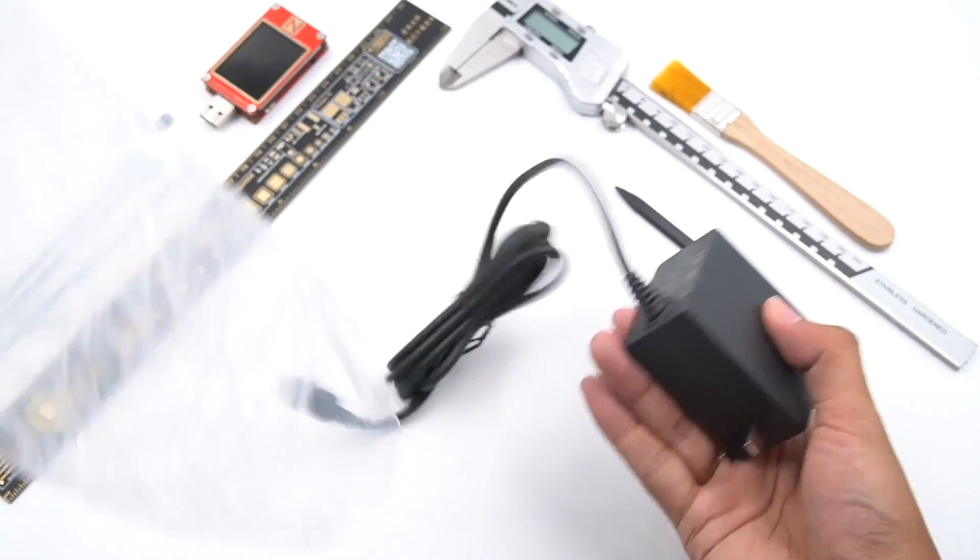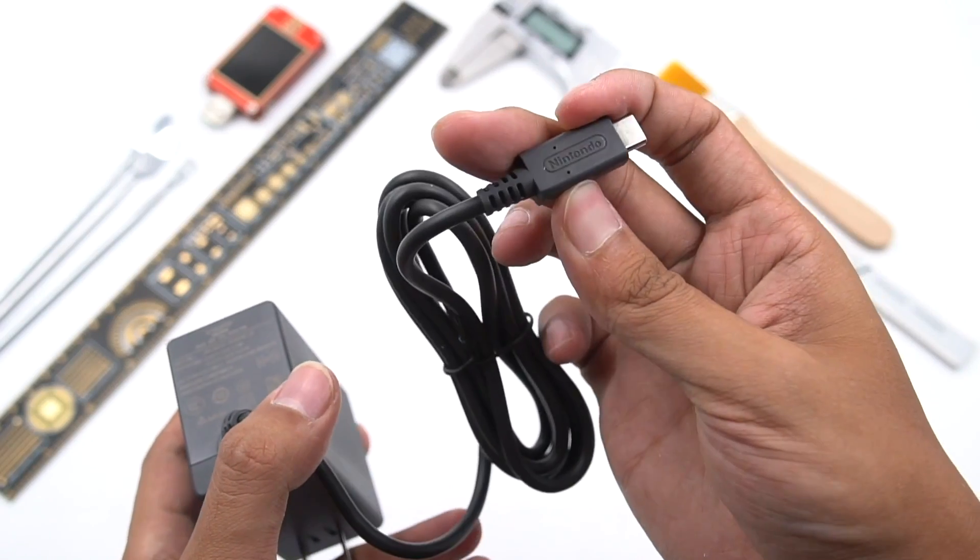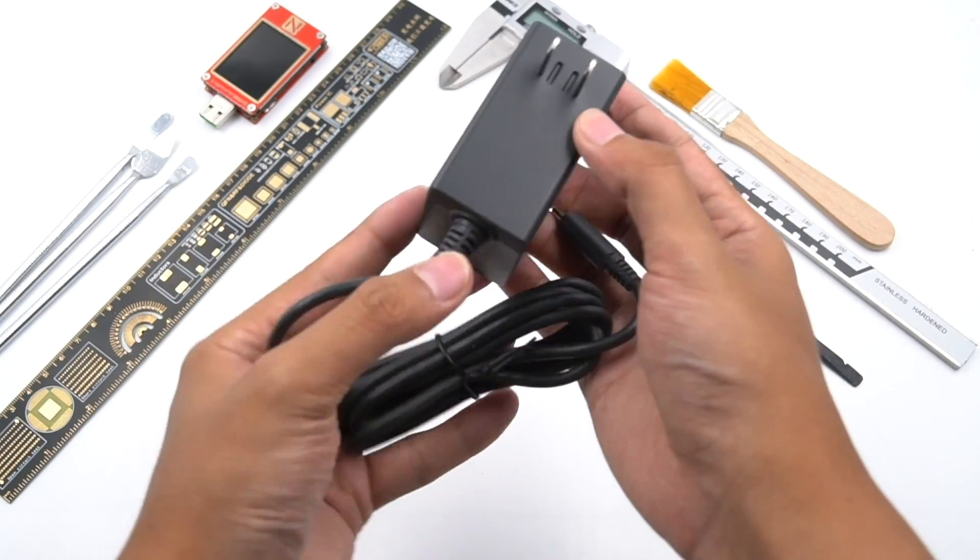Open the packaging and there is only one charger inside. The overall appearance is just like a cube, with a USB-C charging cable. AC output is two pins.